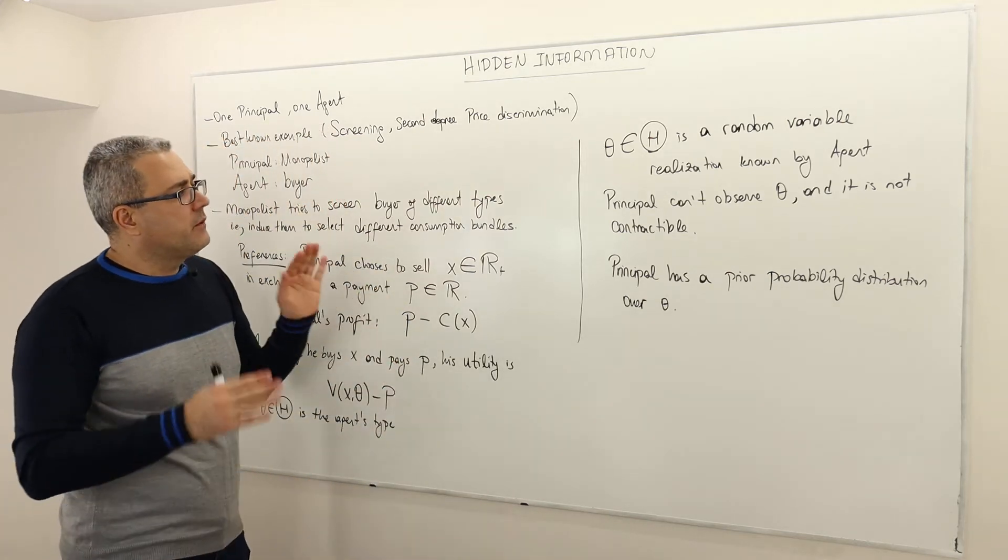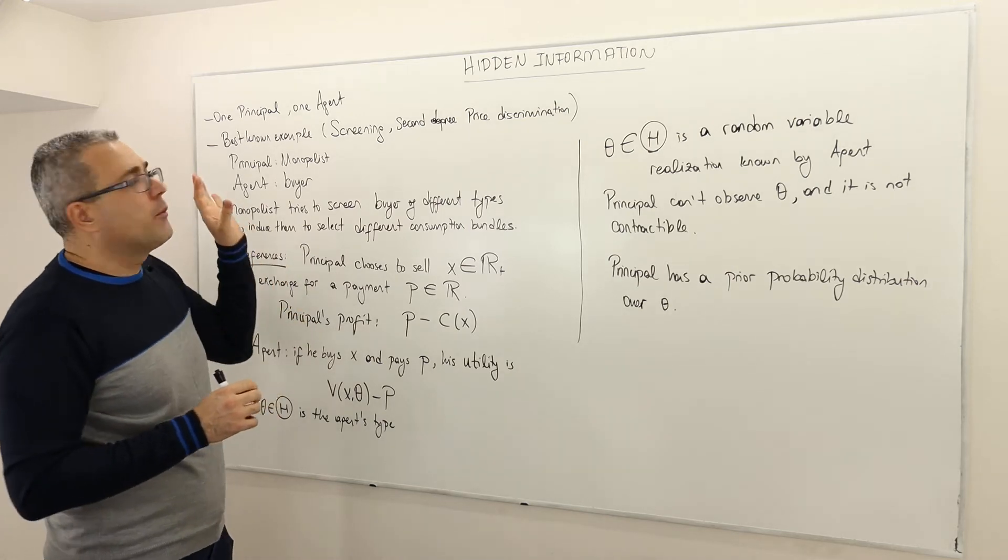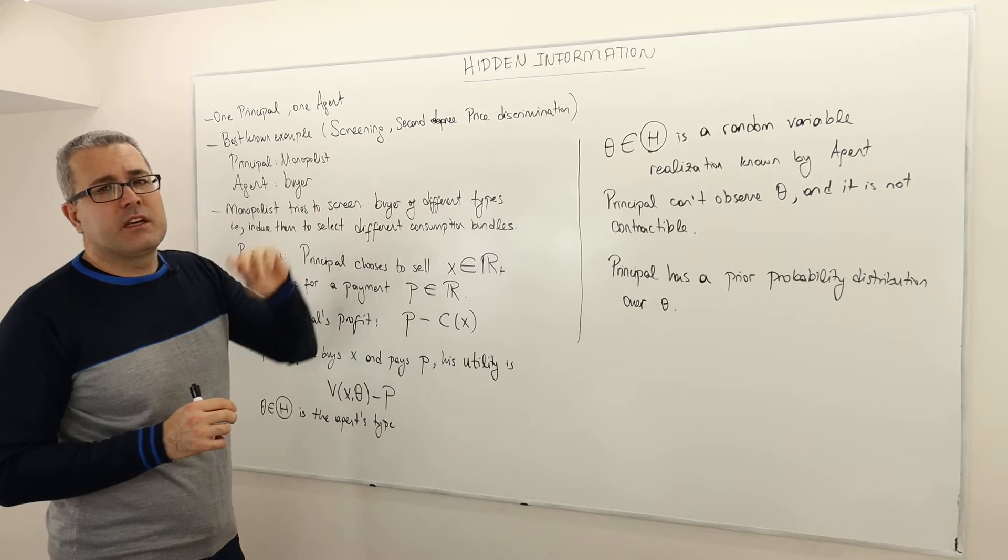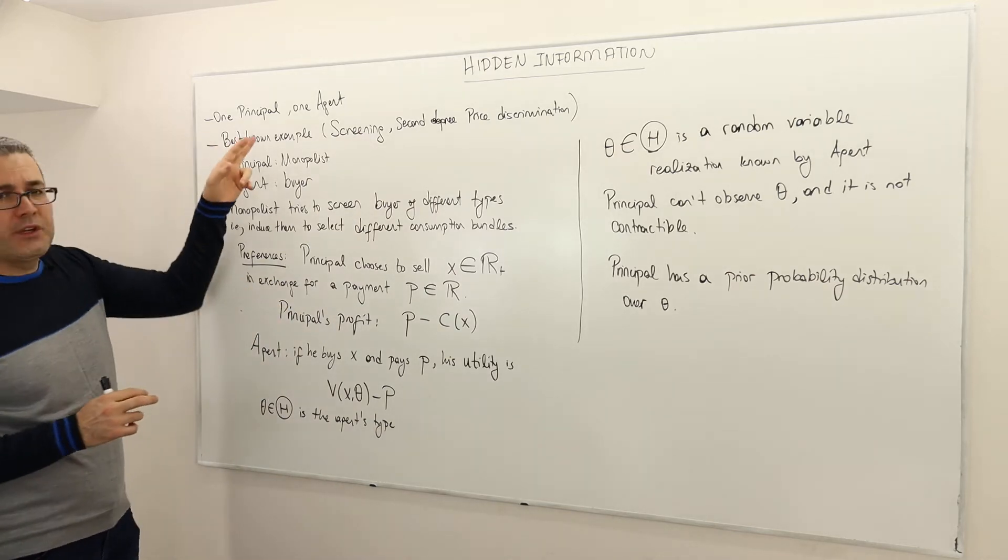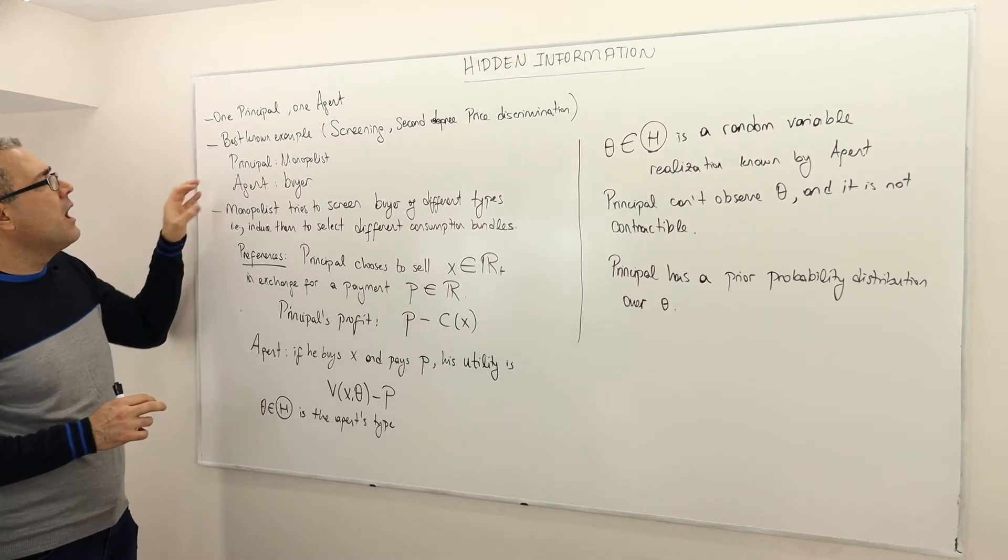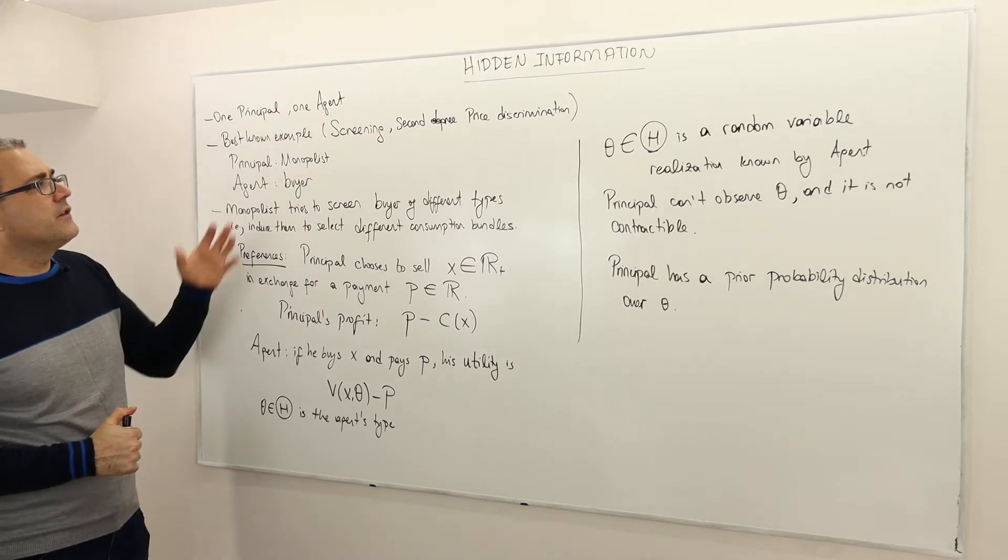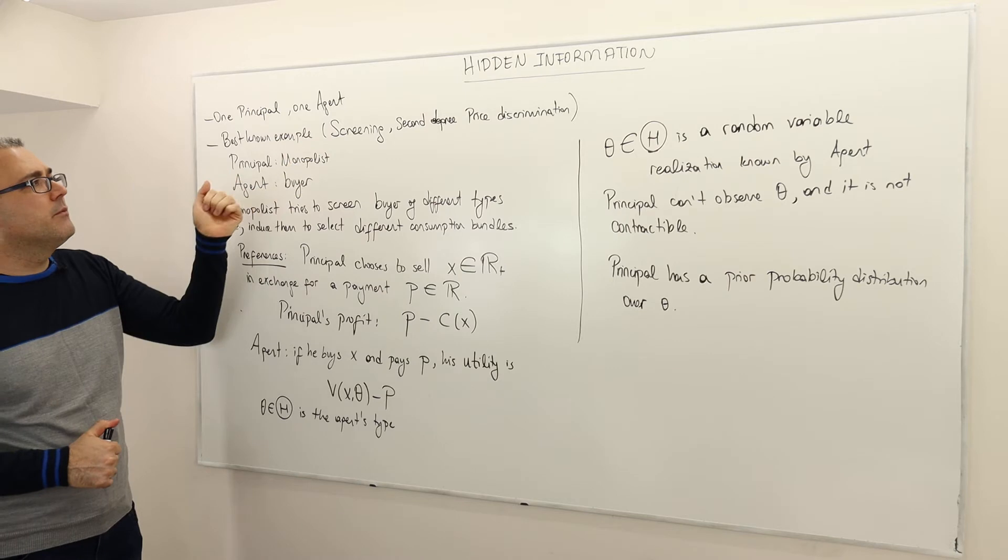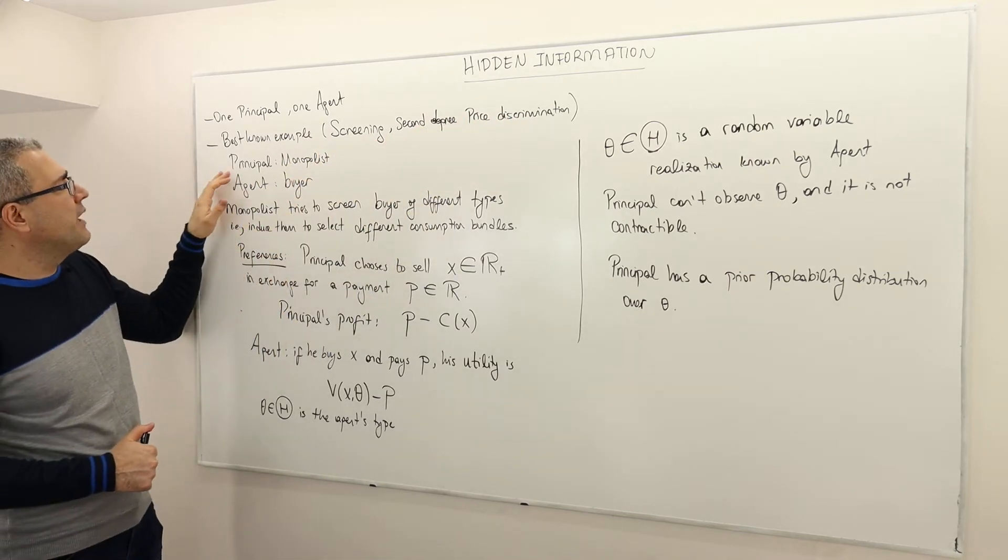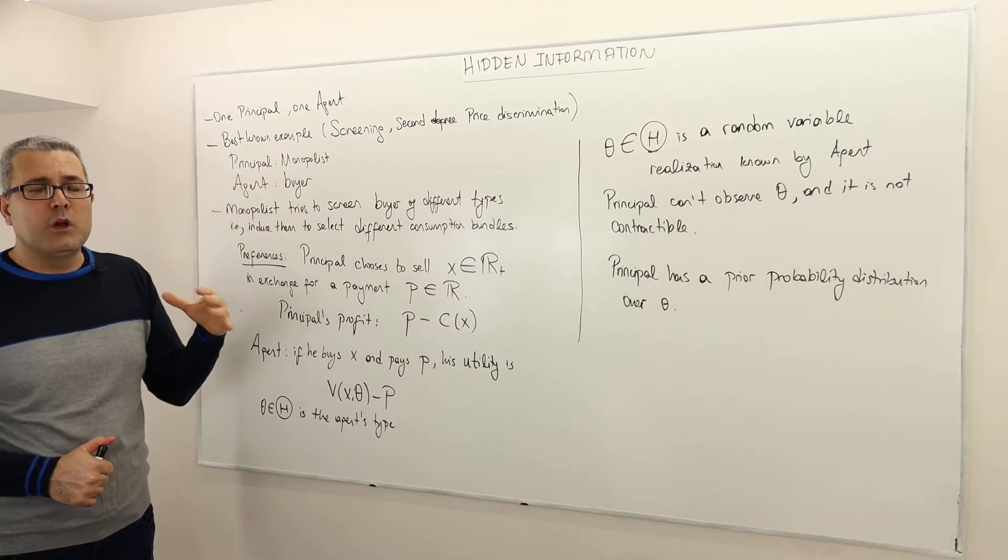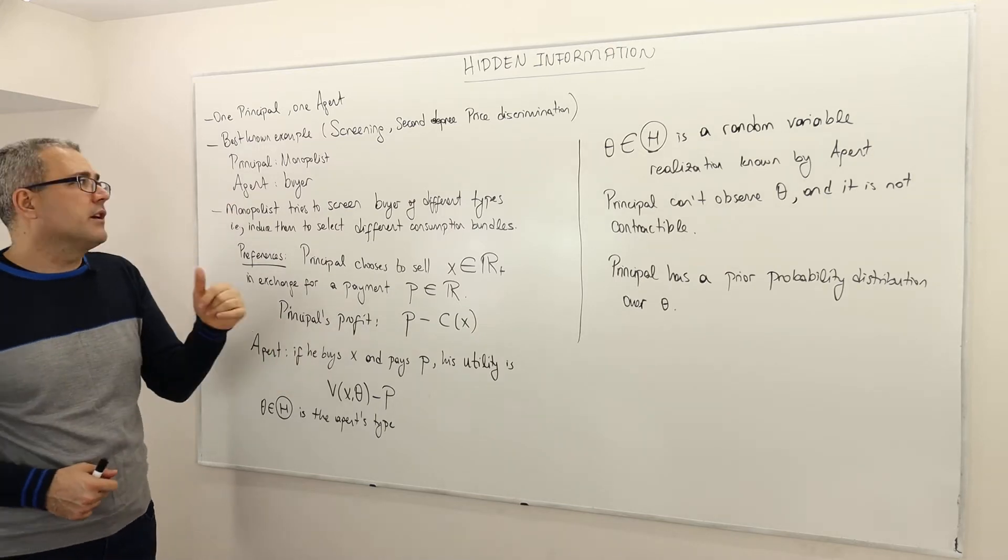In this episode, I'm going to describe one simple principal-agent model to study hidden information. So don't forget, there are two players, one principal and one agent. The best known example in case of hidden information is also called a screening problem or second-degree price discrimination because we assume that the principal is the monopolist firm who would like to sell some product to the customer and the agent is the buyer.